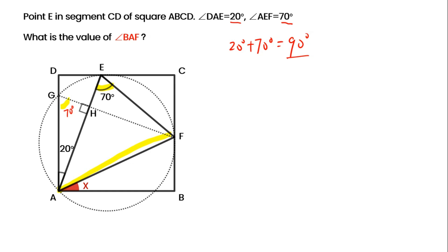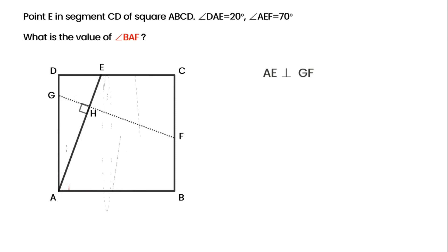So angle AHG is 90 degrees, meaning AE is perpendicular to GF. Using square ABCD and the fact that AE is perpendicular to GF, we can prove that AE equals GF.